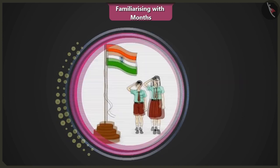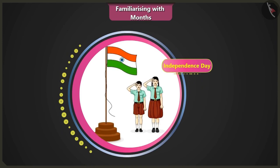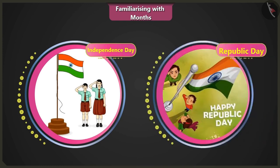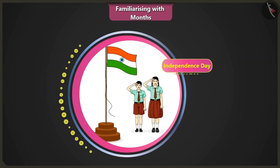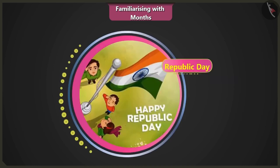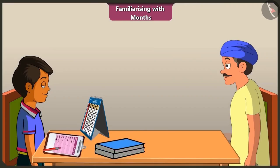Now tell me, Independence Day comes in which month? Oh, I can never remember in which month Independence Day and Republic Day are celebrated. Our country India got independence from the Britishers on 15th August, so Independence Day is celebrated in August. Republic Day is celebrated on the 26th of January — on this day the Constitution of India was implemented. Now I understand, I will be able to do my homework easily.